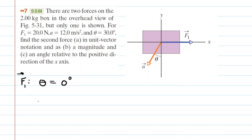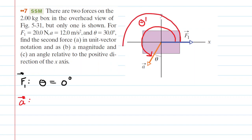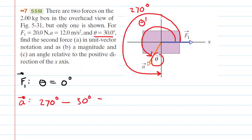Next, we would like to look at the acceleration vector. The acceleration vector has this angle theta that's marked, but what we need is the angle measured from the positive x-axis — we'll call that theta prime. The angle from the positive x-axis all the way around to the negative y-axis is 270 degrees. So to get theta prime, we take 270 degrees and subtract the marked angle theta, which is 30 degrees. So the angle measured from the positive x-axis for the acceleration vector is 240 degrees.